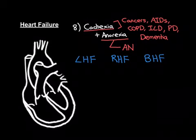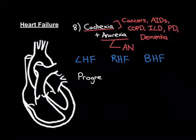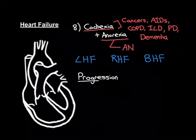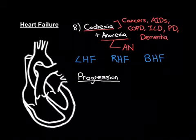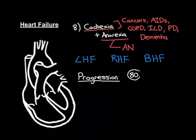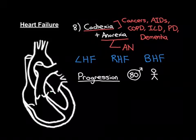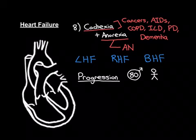Let's now discuss the progression of heart failure — the natural history and how heart failure can kill you. Let's use a specific example: say someone has aortic stenosis. An 80-year-old gentleman who's had a good life but is now developing aortic stenosis — a very calcified aortic valve. Let's say he's not suitable for surgery, or let's say it's 200 years ago where surgery isn't an option. We're going to follow the natural history of the disease.